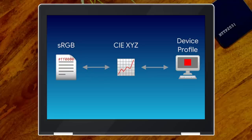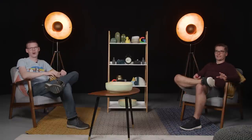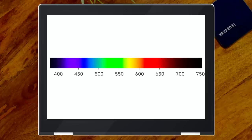Instead of having a conversion from sRGB to every single monitor out there and for all other color spaces to every single monitor, we have one base color space: CIE XYZ. We can convert from a color space to XYZ and then from XYZ back to the device and vice versa. That's how color spaces work. Now let's talk about how they got there because that's actually a really interesting story. I'm going to assume we can all accept that light is an electromagnetic wave that our eyes can perceive, and depending on the wavelength, we see a different color.